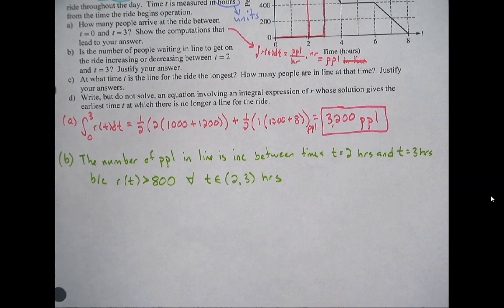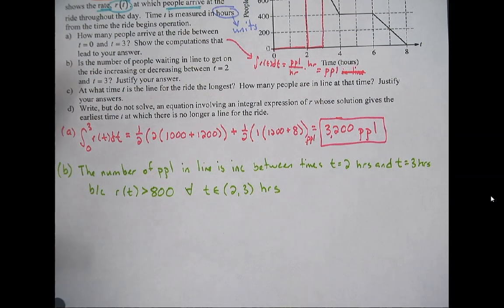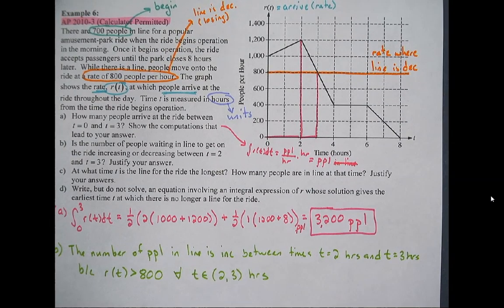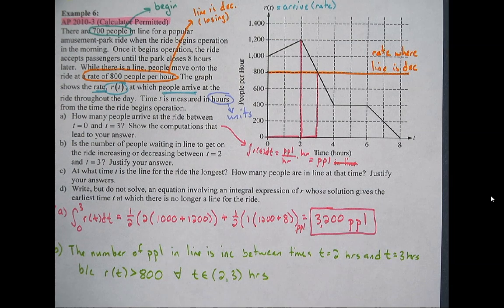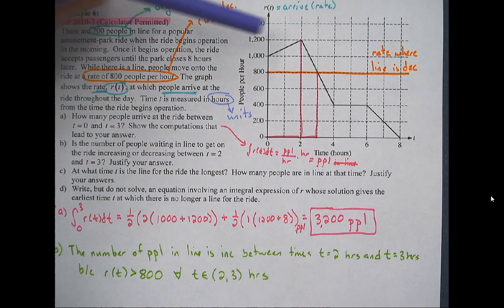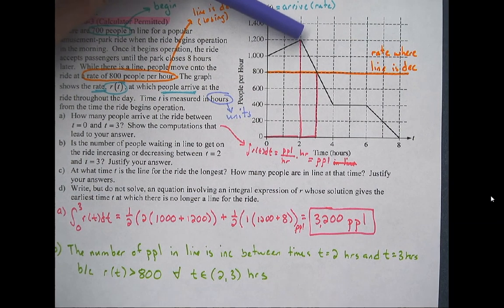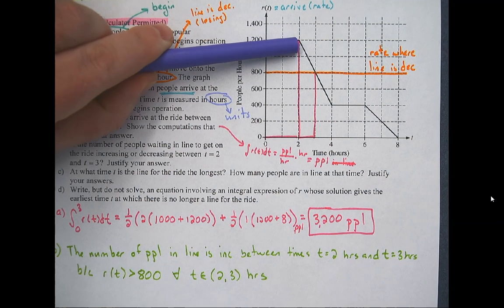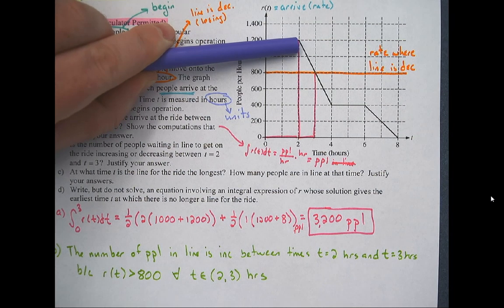At what time t is the line for the ride the longest? If I were to make a prediction — and lots of people, including my past self — would point to where the arrival rate is highest. But that's when the rate of people getting in line is increasing the most; it has nothing to do with how long the line is. From here to there, the rate at which people are getting in line is always above 800, so the line is always growing.